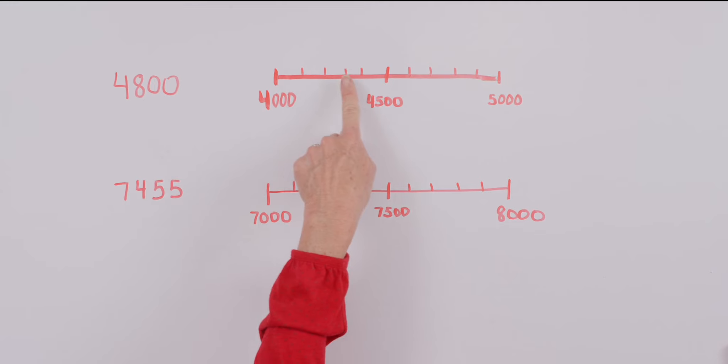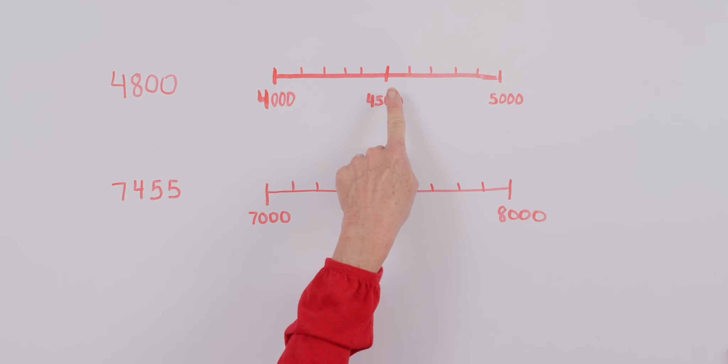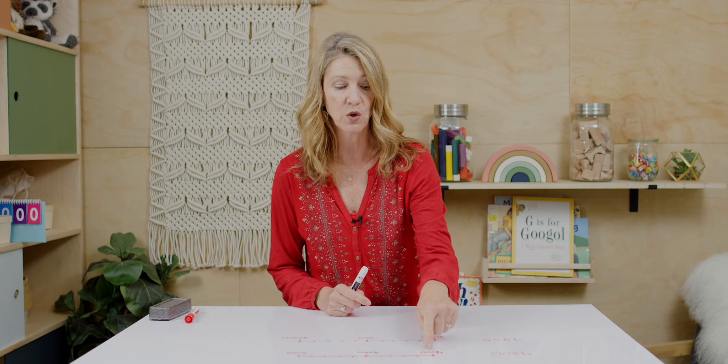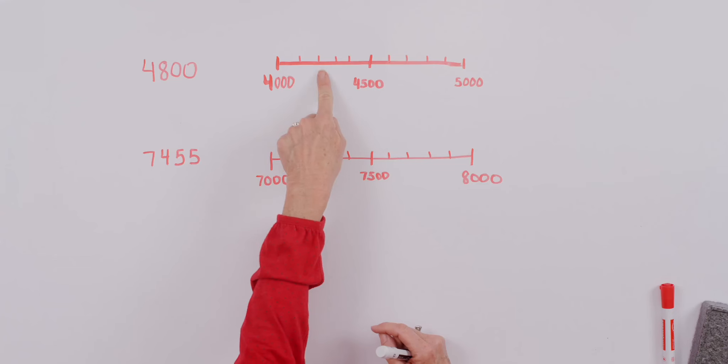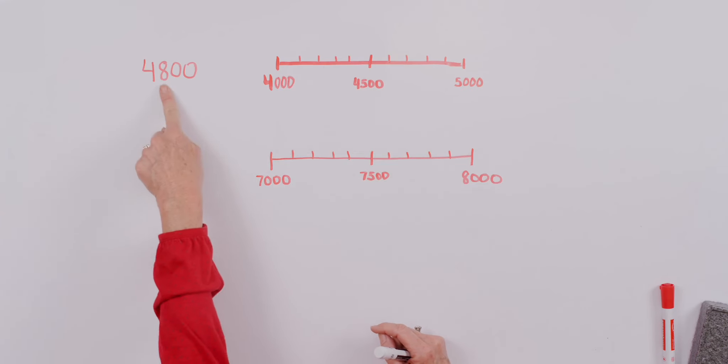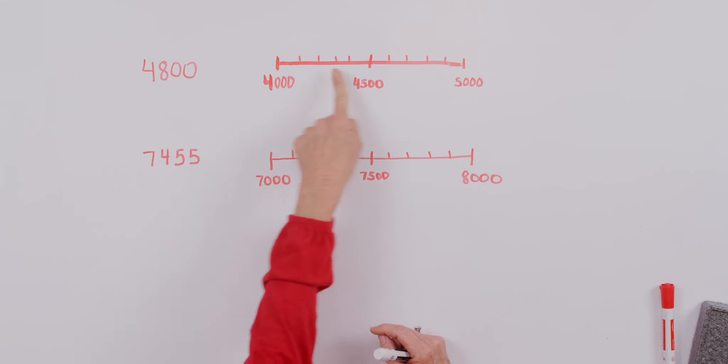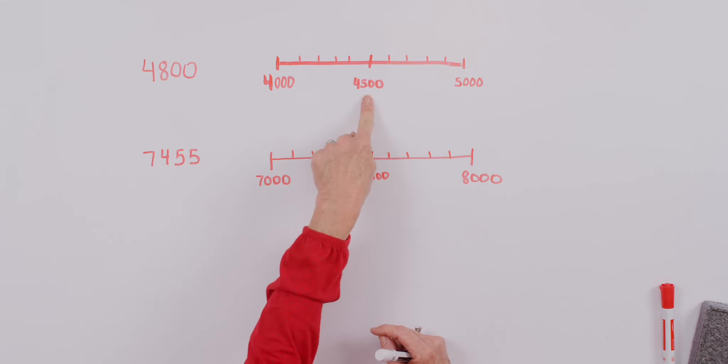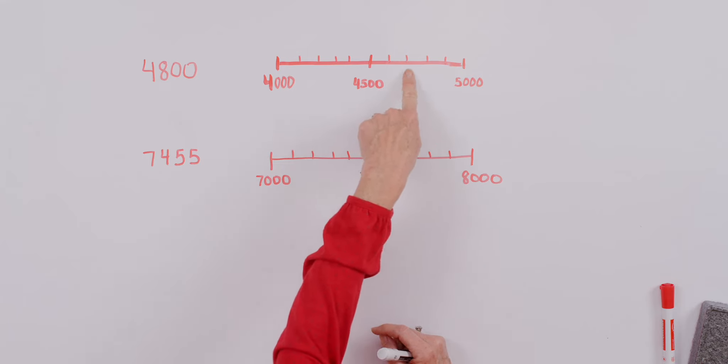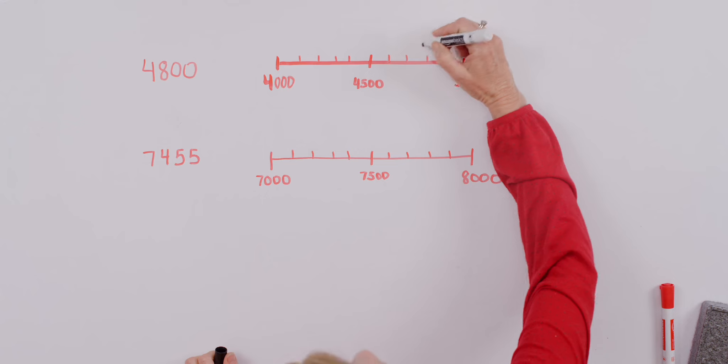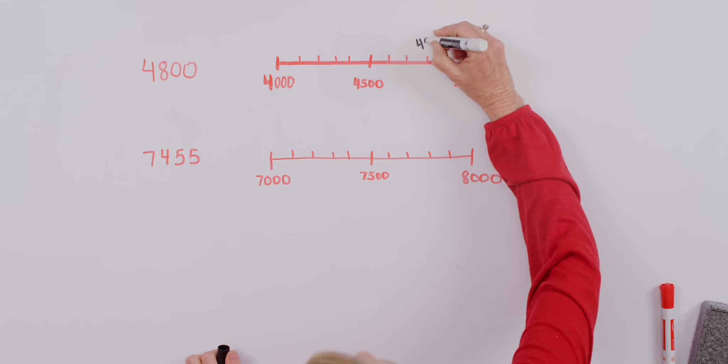There's 1, 2, 3, 4, and then here we are at 5. Yeah, they each stand for 100. So, 4,100, 4,200, and so on. But we want to find 4,800. So, we could start from the beginning, but I can also come here and say 4,500, 4,600, 4,700, 4,800. Let's put it on our number line. All right.